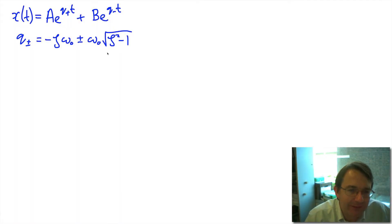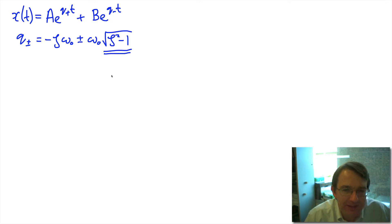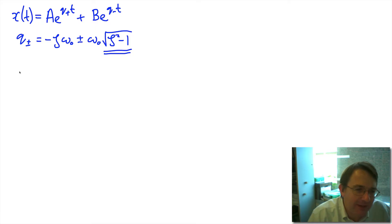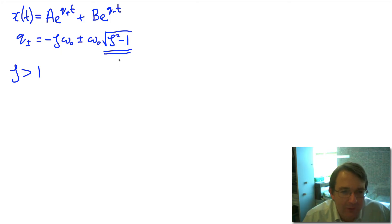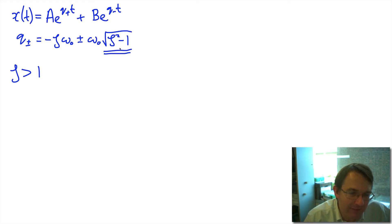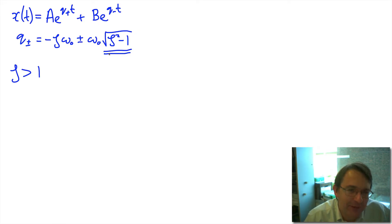The problem we have here is this square root. The first case we're going to consider is the case where zeta is greater than 1. When zeta is greater than 1, we've got the square root of a positive number, and so everything's fine. But we're going to have other cases where zeta is not greater than 1, and that is going to lead us into some trouble. But the first case is when zeta is greater than 1.